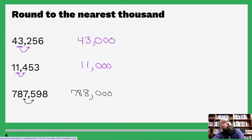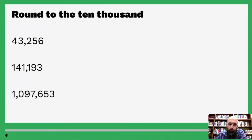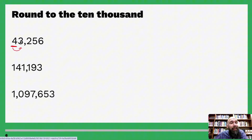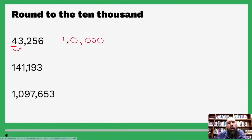Round to the ten-thousands — these numbers are just so big! Same exact rules: ones, tens, hundreds, thousands, ten-thousands. Underline it, go to the right — four or below, let it go. We turn one, two, three, four digits into zeros. Since three is four or below, we let four go, and that becomes forty-thousand.